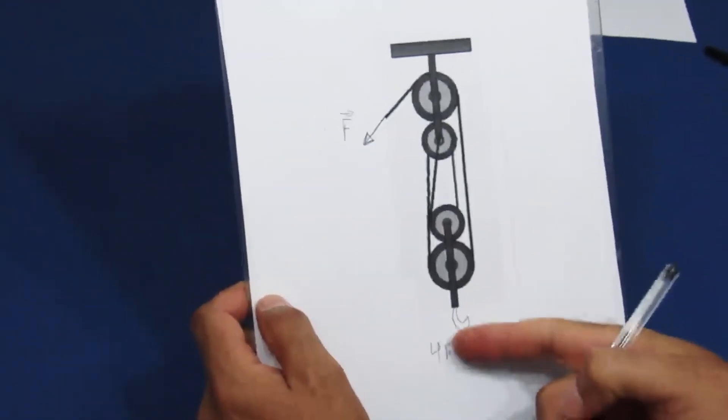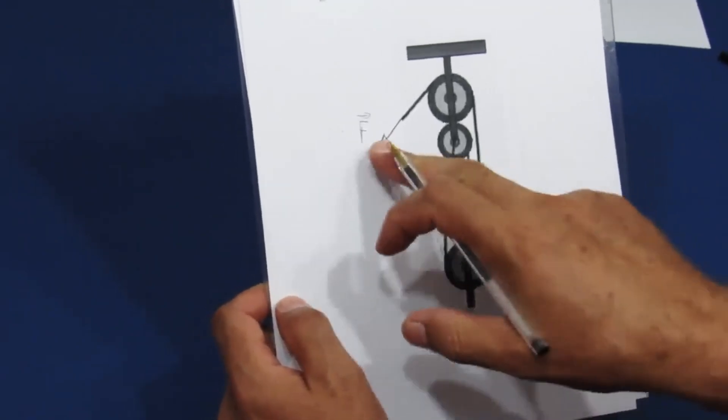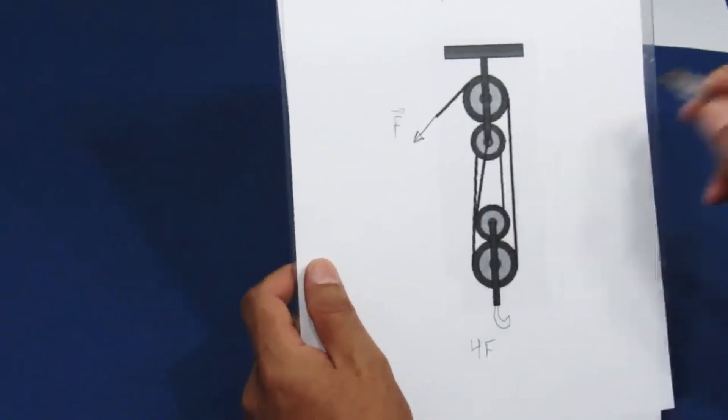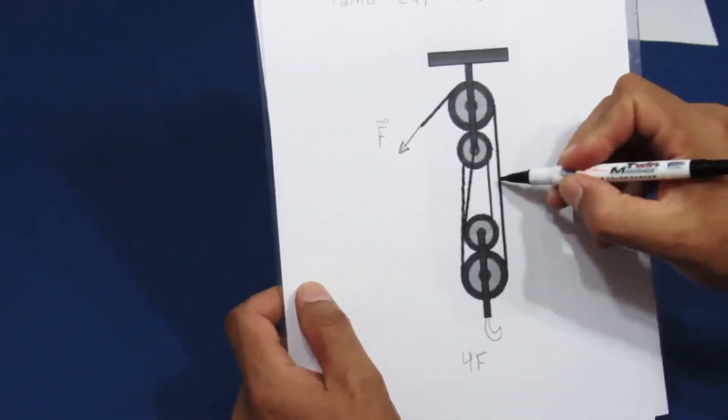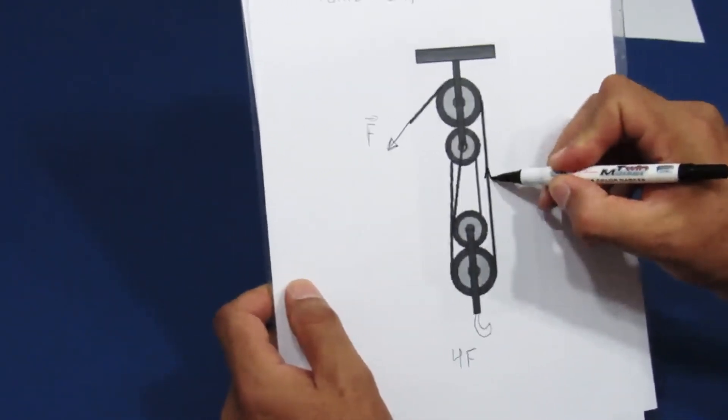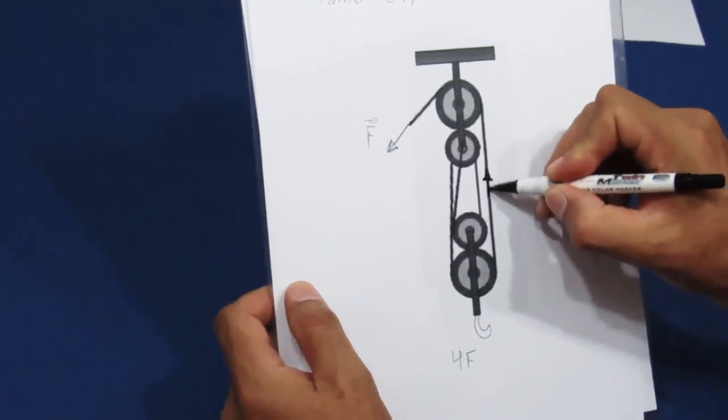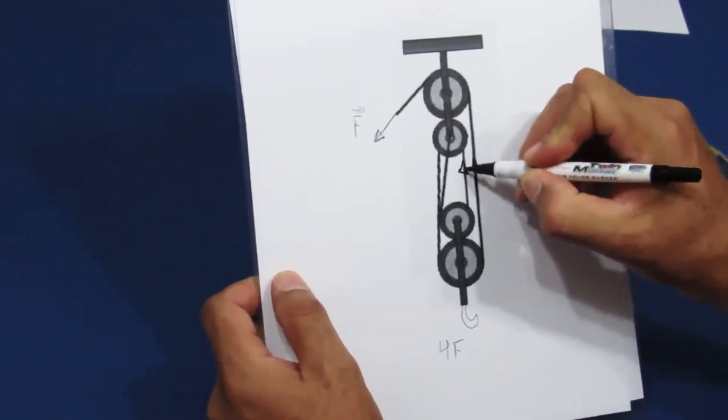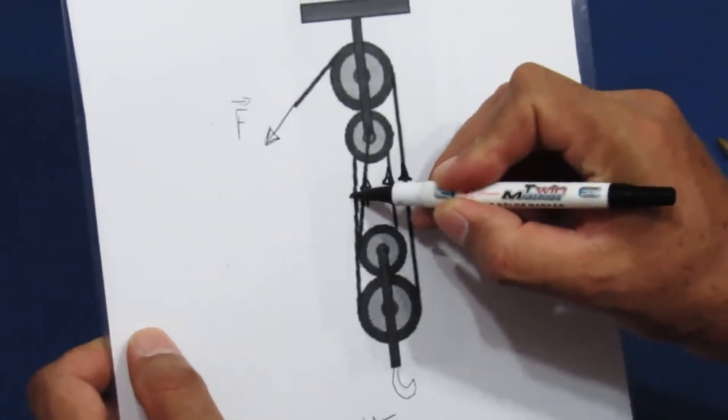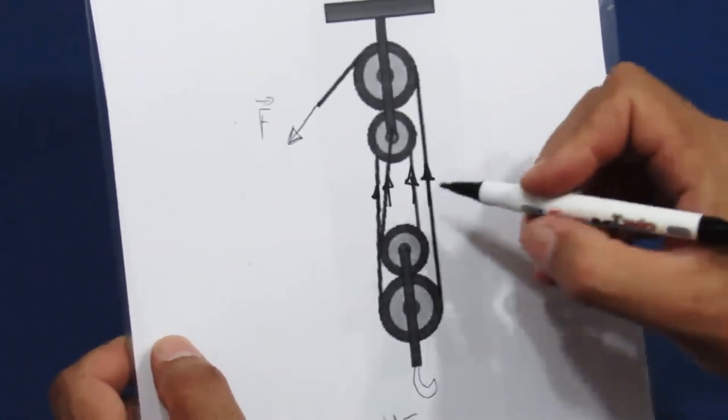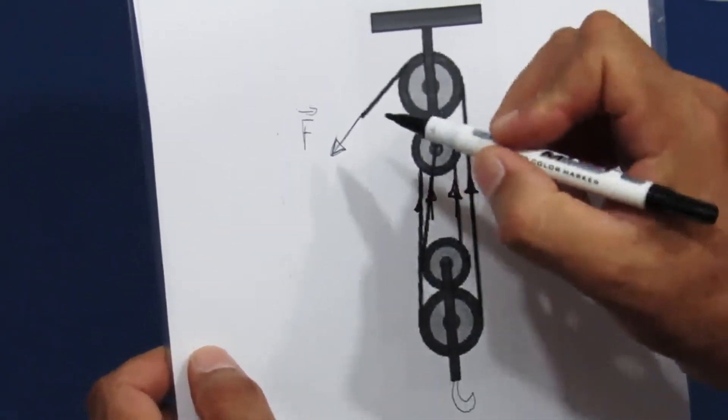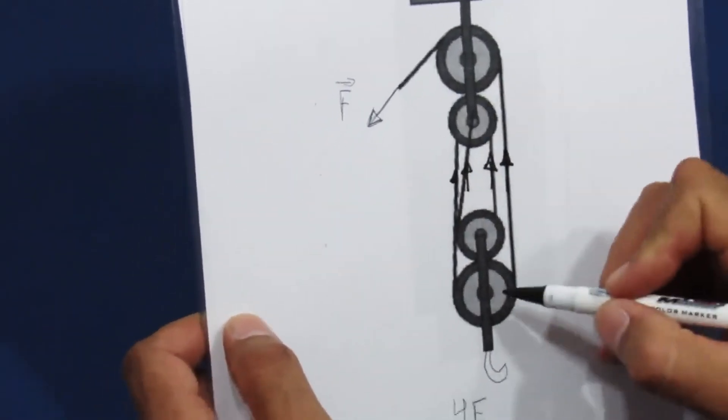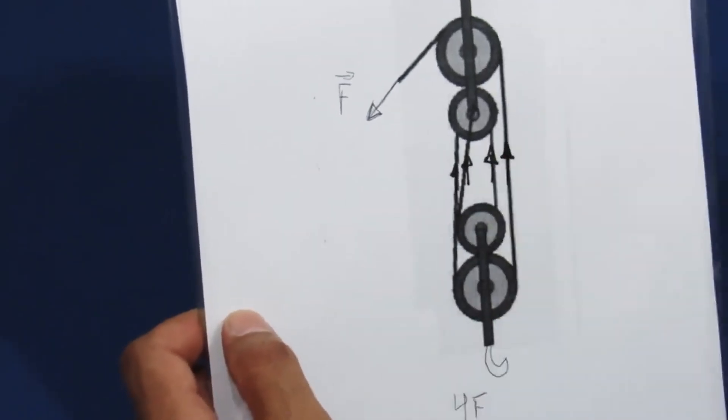There is a weight here that is four times greater than the force that I'm applying. But look what happens in each wire. Let me get this other pen. In each of these wires, a force will appear. A force F, another force F, another force F, and another force F. There are four forces pulling this part here upwards. With the action of a single force F that I applied, four forces will appear that are pulling the system upwards.